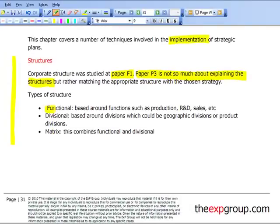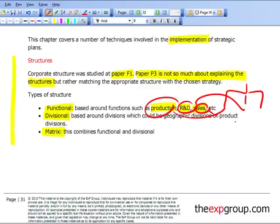There are three main types of structures we've got here: functional, divisional, and the matrix structure. First of all, functional, as the name suggests, is where the structure is based around functions within the business. Examples here are production, research and development, and sales. These are individual functions, and the structure of an organization would be based around these functions.